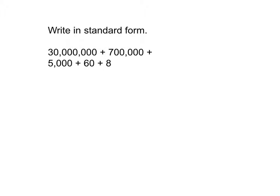Here, we're asked to write in standard form, and it looks like we're given expanded notation to rewrite in standard form. In the millions period, it looks like we have 30. In the thousands period, we have 700,000 plus 5,000, which give us 705,000, and finally, we have 68 in the 1's period.